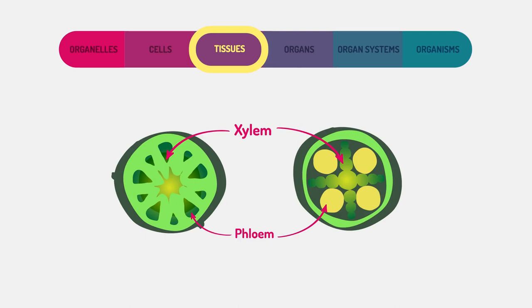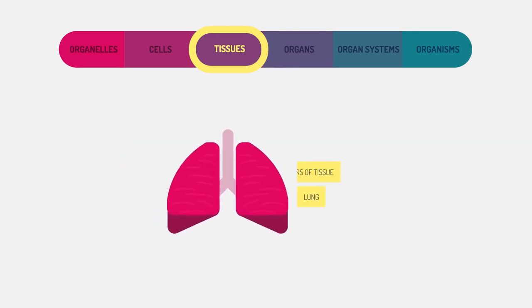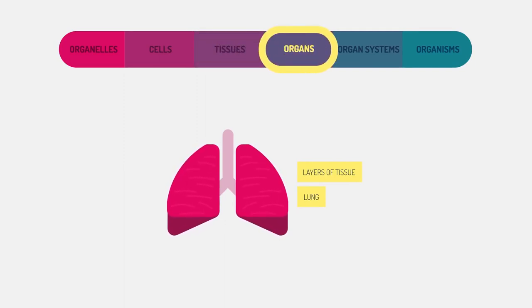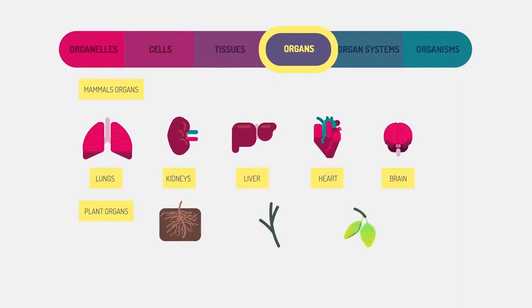When there are layers of tissue working together, they form an organ. Organs are specialized to carry out specific life processes. All animals contain organs. In fact, mammals have five vital organs that they cannot live without: lungs, kidneys, liver, heart, and brain.